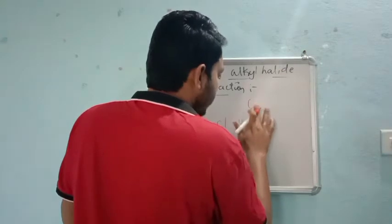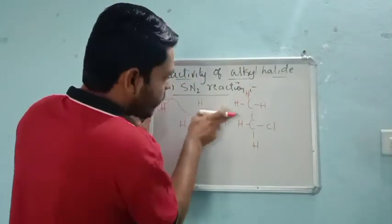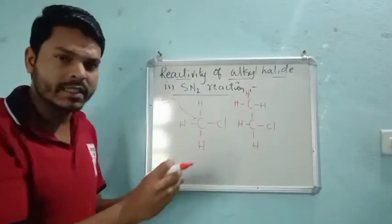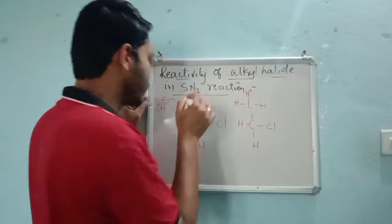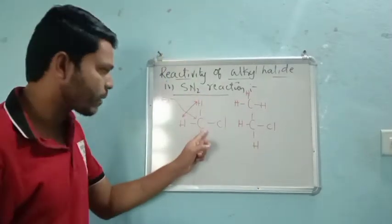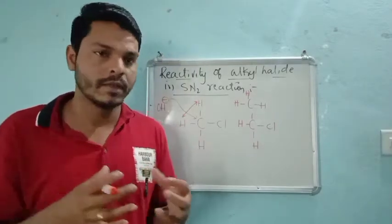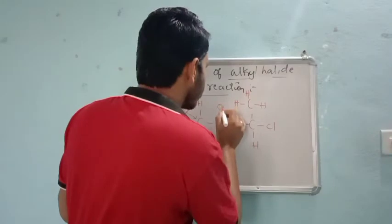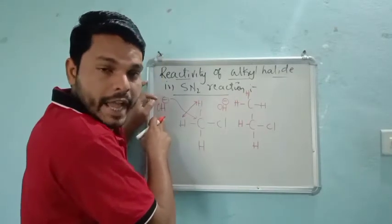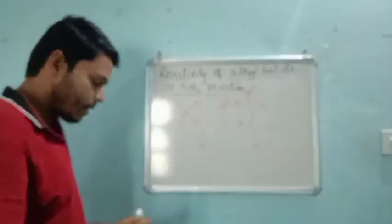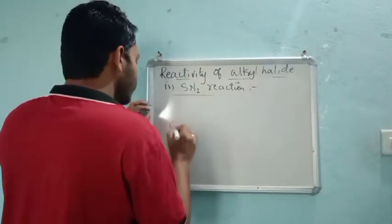Now if we move towards primary alkyl halide and write the open structure, again OH will attack from the back side. But now a little bit of crowdedness is increased. There was a good amount of space for OH to attack on the carbon in methyl chloride, but now because we have increased steric hindrance — meaning crowdedness — on this carbon atom, attacking with OH is a little bit tougher as compared to methyl chloride.